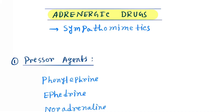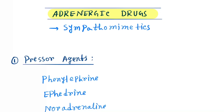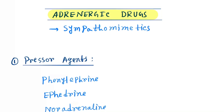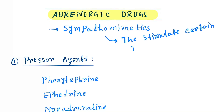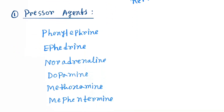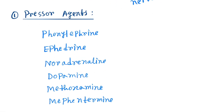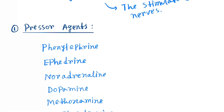Hello friends, today our topic is the adrenergic drugs, so let's learn the drug names with mnemonics. Adrenergic drugs are also called sympathomimetic drugs because they stimulate certain nerves, or the sympathetic system.